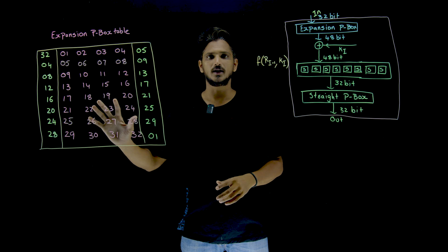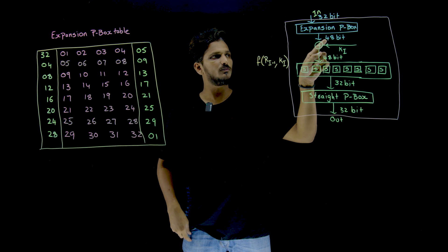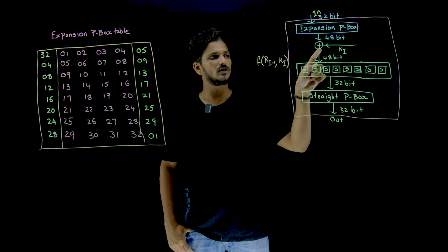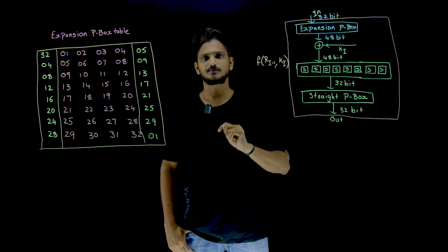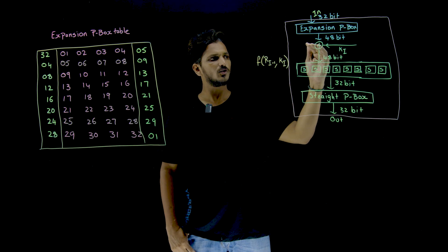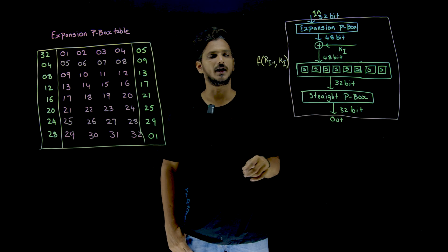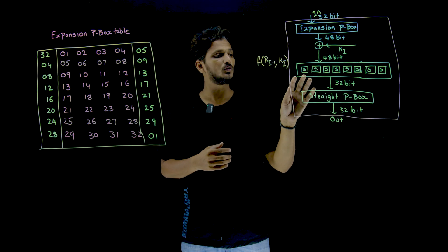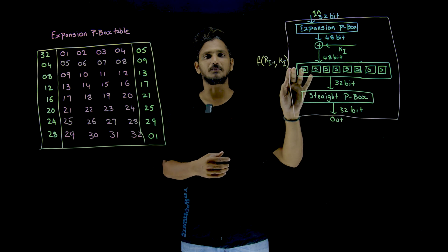So now, how are we going to convert this 32 bits to 48 bits? That we are going to understand here. Once the 32 bits are converted to 48 bits, it is going to XOR with the key K(i), and you are going to get an output of 48 bits. That 48 bits are sent as input to the next step.